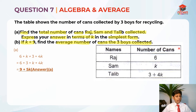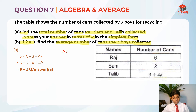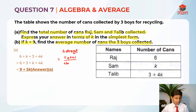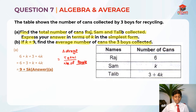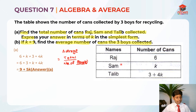We need to find the average of 9 plus 5K. The formula for average is: total divided by number of items — in this case, the number of people. There are 3 people: Raj, Sam, and Talib. So you take 9 plus 5K divided by 3.